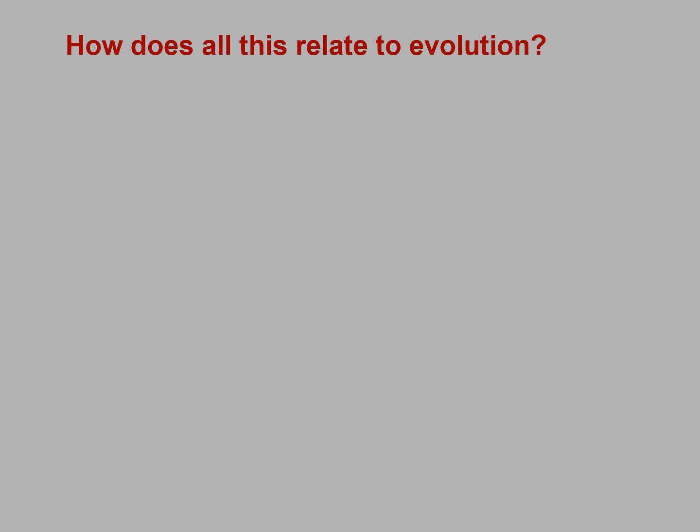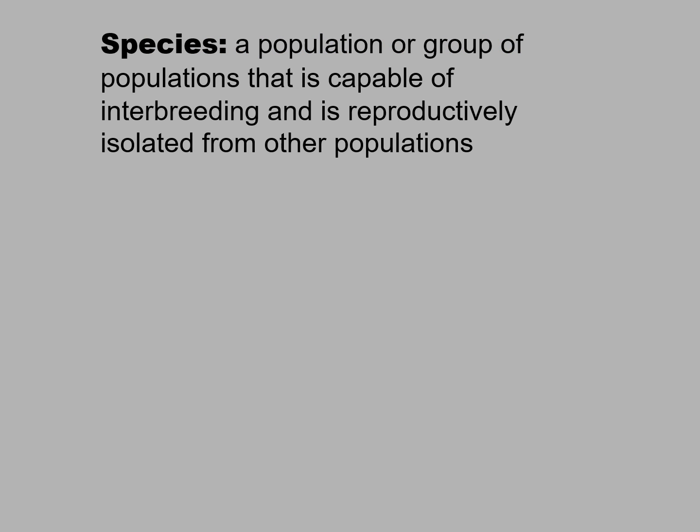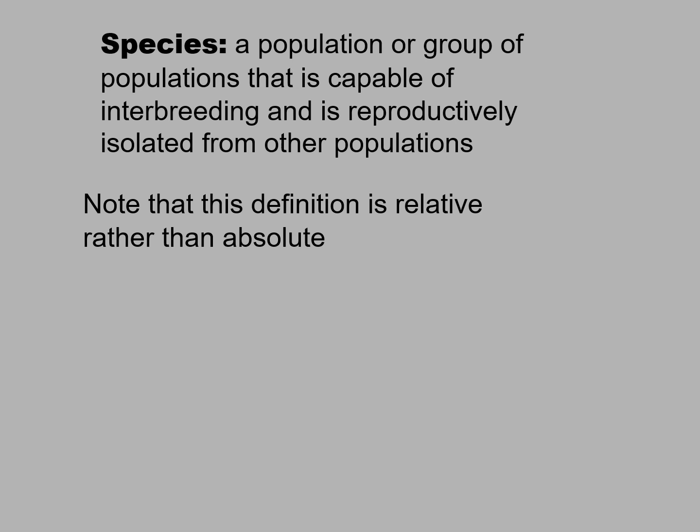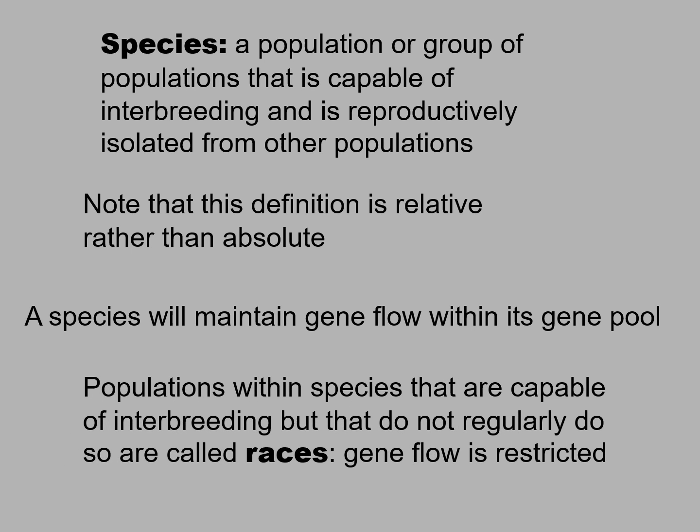So how does all of this relate to evolution? Natural selection takes place on the level of populations, not individuals. What is a species? It's a population or group of populations that is capable of interbreeding and is reproductively isolated from other populations. Note that this definition is relative rather than absolute. A species will maintain gene flow within its gene pool. Populations within species that are capable of interbreeding but do not do so regularly are called races — the gene flow is restricted.